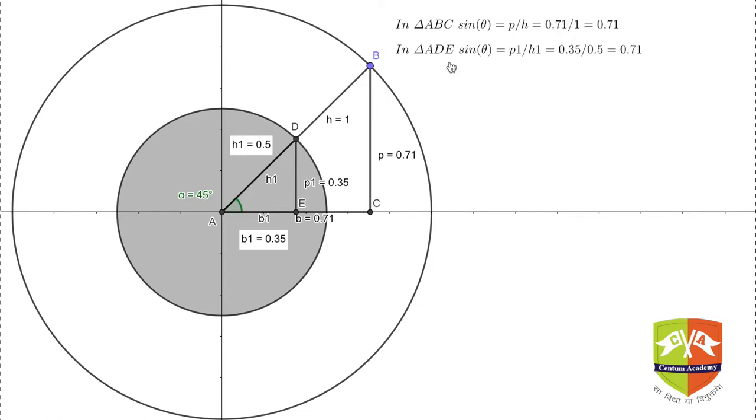Now I'm going to vary this angle by changing the position of B, and you will see that the ratio, that sine theta value, doesn't change.